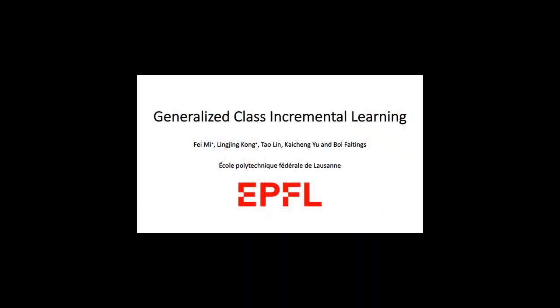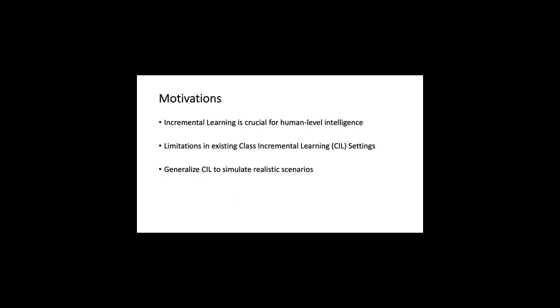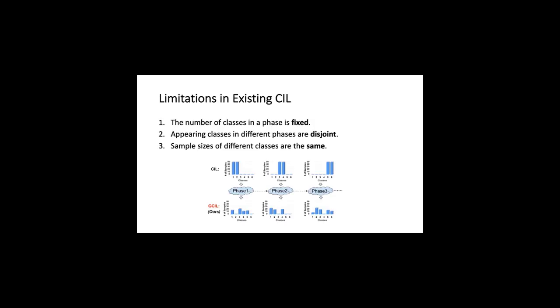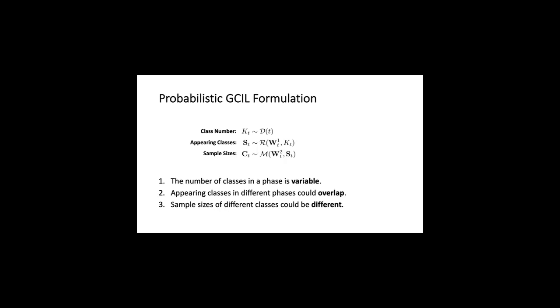Hello everyone, I would like to introduce our work called Generalized Class Incremental Learning. The motivation of our work is to remove the limitations in existing class incremental learning settings to simulate more realistic scenarios. There are three major limitations in existing CIL: first, the number of classes in a phase is fixed; second, the appearing classes in different phases are disjoint; and lastly, the sample size of different classes is the same. To this end, we propose to sample the class number, the appearing classes, and the sample size of a phase from three different distributions.